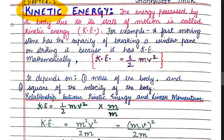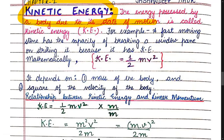Kinetic is an adjective meaning produced by motion. Kinetic energy is the energy possessed by a body due to its state of motion. For example, a fast-moving stone can break a windowpane — if you place a pebble near a window it does nothing, but thrown with speed its kinetic energy can break the glass.